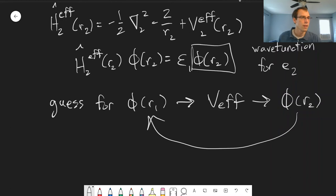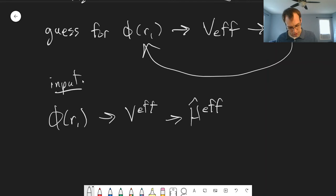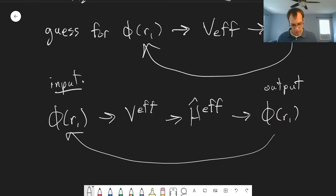And so what this looks like, this is great for computers, because computers are good at doing the same thing over and over again. So we have an input, that is our guess for phi(R1). We use that to find an effective potential energy, which gives us an effective Hamiltonian, which we can use to solve an effective Schrodinger equation to give us a new wave function as an output. And we do this until we get the same wave function. So we repeat until we get the same thing, until nothing changes.